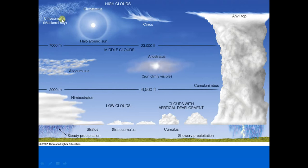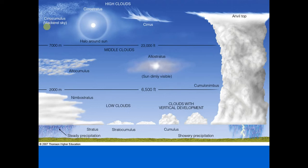Cirrocumulus clouds are actually one of the rarest major cloud types. They appear as small rounded white puffs that may occur individually or in long rows. The puffs appear small because they're so far away — about 23,000 feet, or roughly four miles up. Cirrocumulus clouds rarely cover more than a small fraction of the sky, and the small ripples resemble fish scales, hence the expression 'mackerel sky.'